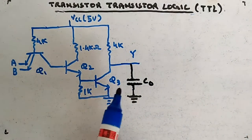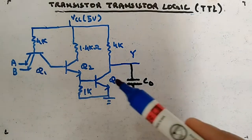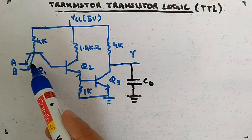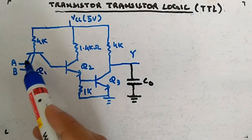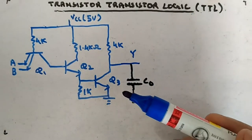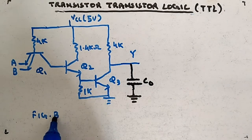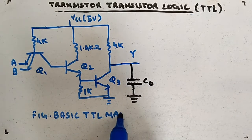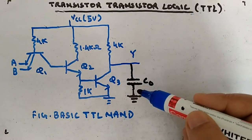When any of the inputs or both inputs is zero, this transistor will be forward biased, this will be in active region, this will be in cutoff - so output will be high. When both inputs are one, this will be in reverse active, this will be in saturation - output will be low. This is the basic TTL NAND gate.